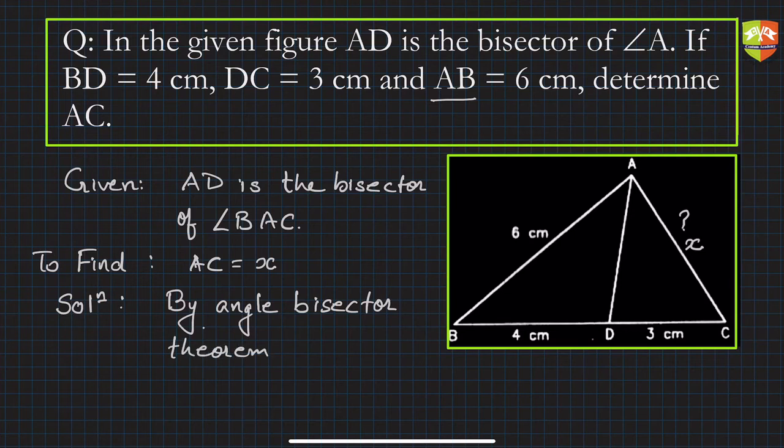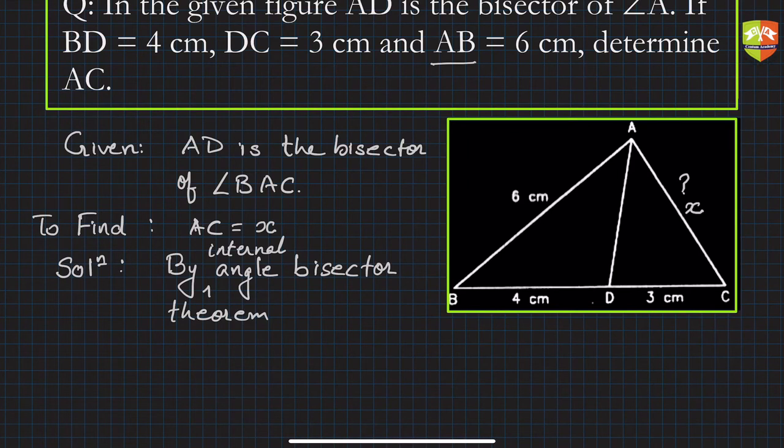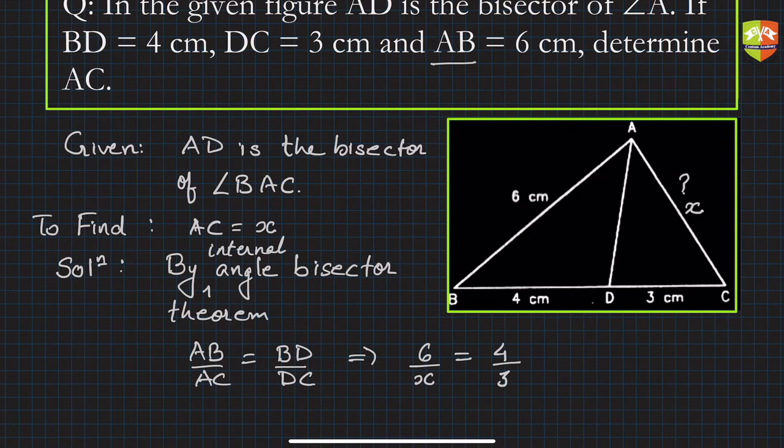By internal angle bisector theorem we know that AB upon AC is equal to BD upon DC. So this implies 6 upon x equals 4 upon 3. So x becomes 6 into 3 upon 4, which is 9 by 2, that is 4.5 centimeter.